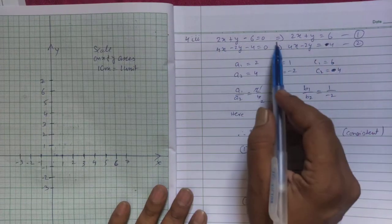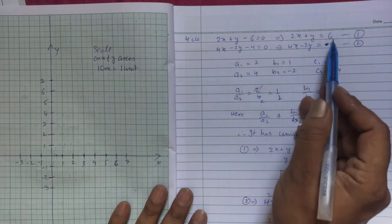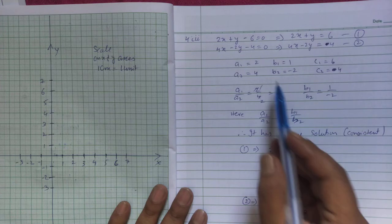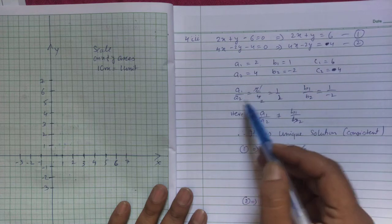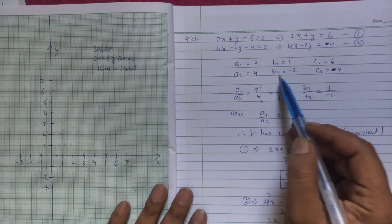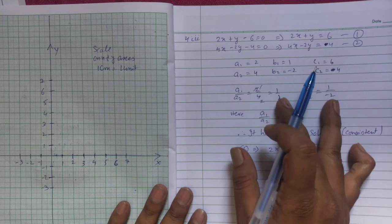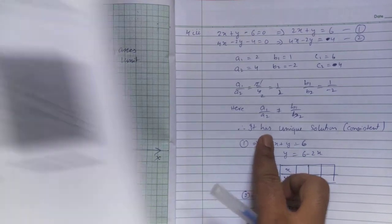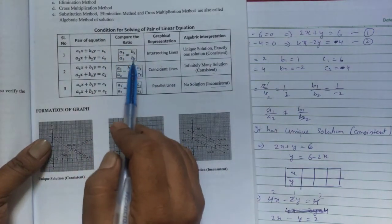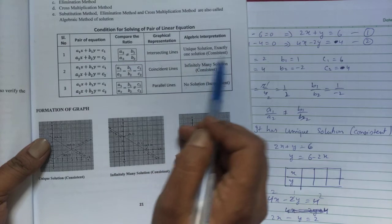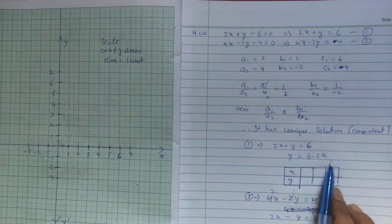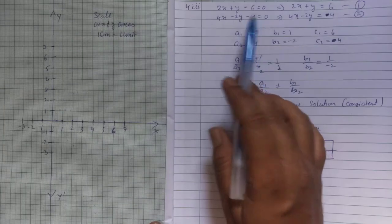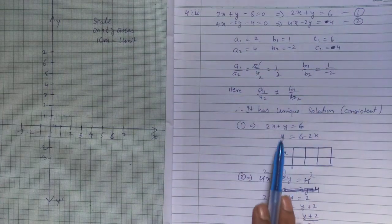For question 3, writing in standard form: a1=2, b1=1, c1=6 and a2=4, b2=-2, c2=4. Finding a1/a2 = 1/2 and b1/b2 = 1/(-1/2) = -1/2. These two are not the same, so it has a unique solution — consistent. There will be only one value of x and one value of y.